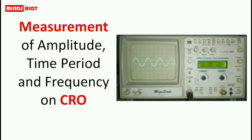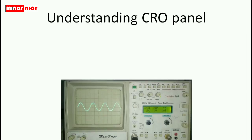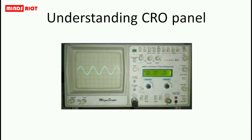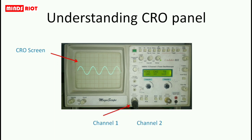For measurement, let's understand the front panel of CRO. This is a dual channel CRO, which consists of two channels: channel 1 and channel 2. This is the CRO screen. Channel 1 is alternately called channel A, and channel 2 is alternately called channel B.